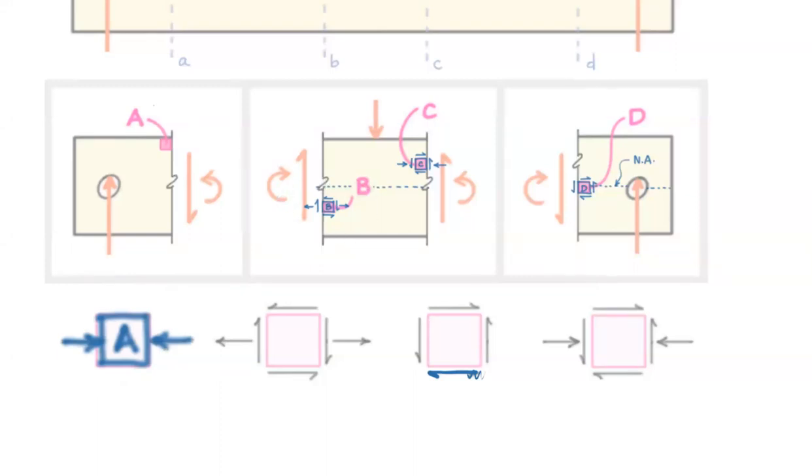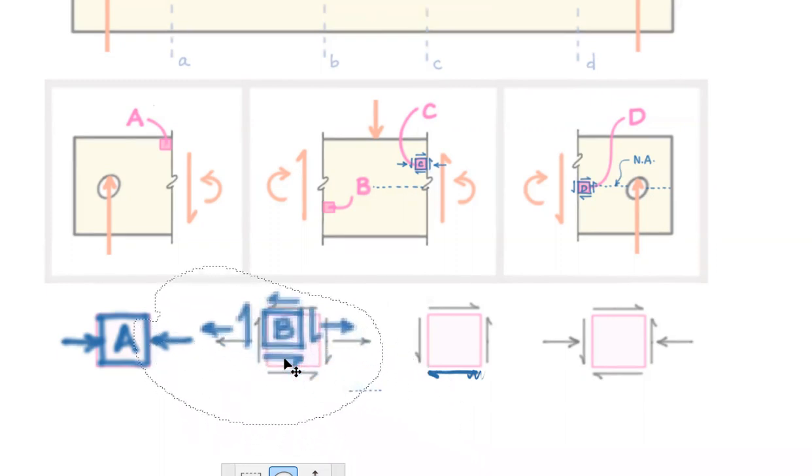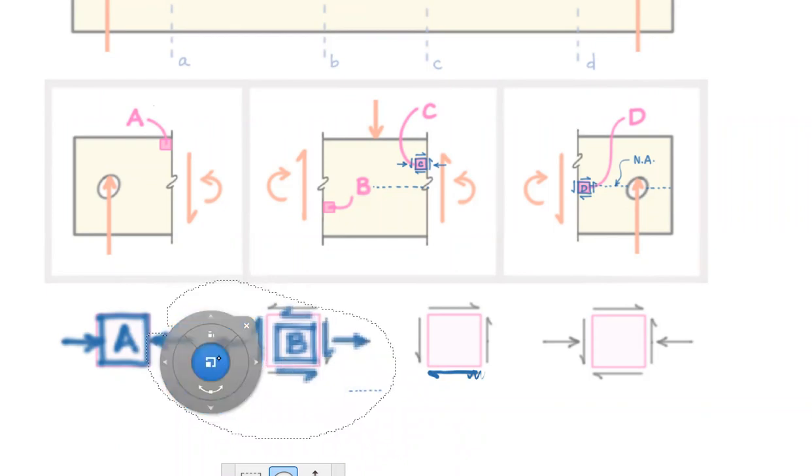B. So I've got flexural and I've got shear stress and I've got tension. So B has to go right there. Okay.